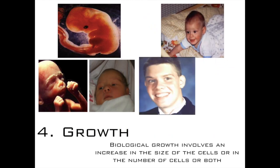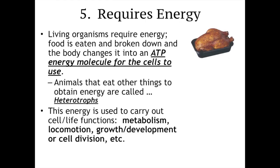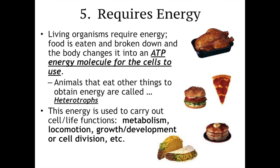Biological growth involves either an increase in the size of the cell or an increase in the number of cells — or both. An increase in size or an increase in number would both be considered growth. Energy: the body needs food for energy production. The energy molecule specifically is called ATP — adenosine triphosphate. Tri meaning three, so three phosphates. Many animals are heterotrophs, meaning they eat other things to get their energy. A herbivore and a carnivore are both heterotrophs — they have to eat other things.